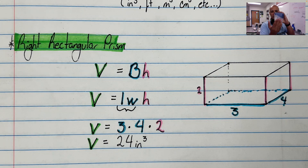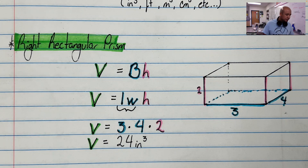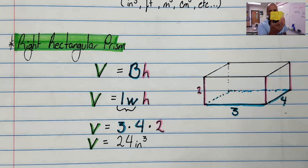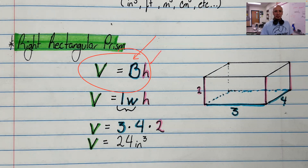Opposite faces are the same — this face is the same as this face; this face on the side is the same as that face on the side; and the top face is the same as the bottom face in terms of units and shape. That's what makes a right rectangular prism. When getting the volume of a right rectangular prism, if you look it up on the reference sheet, you would see: Big B (base) times the height.